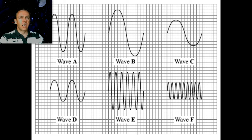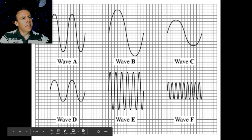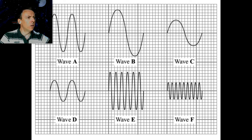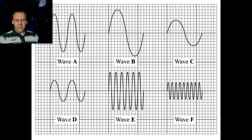The highest frequency wave is wave F. We can tell that because frequency is the number of waves per second. If we're assuming that this is time along here, then this would be the one with the most waves in a given time. In this 10-square block, we've got one two three four five six seven eight peaks. The next highest frequency has got one two three four five peaks within that same block of time. So wave F is the highest frequency.